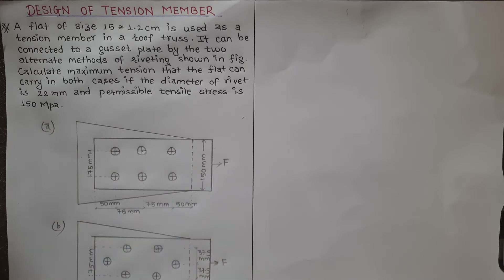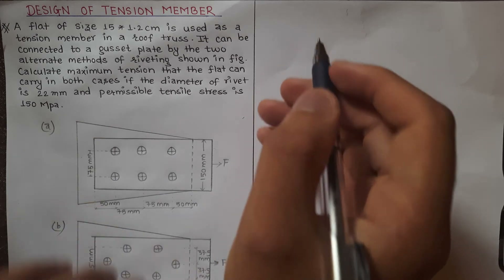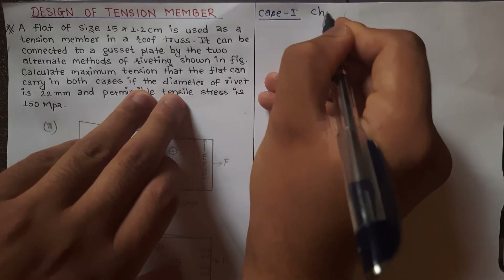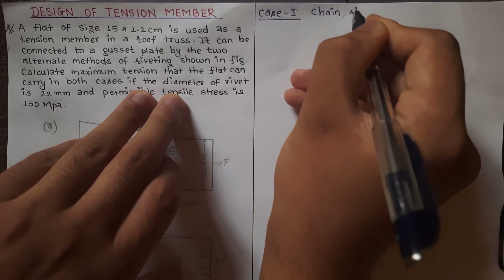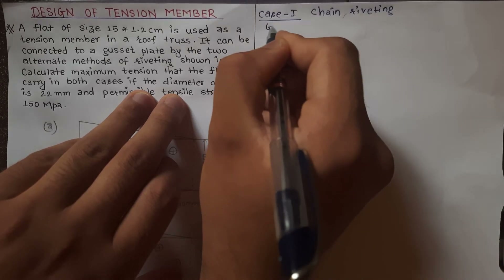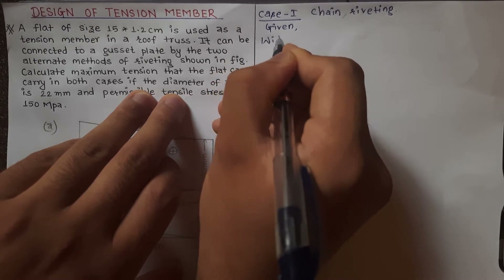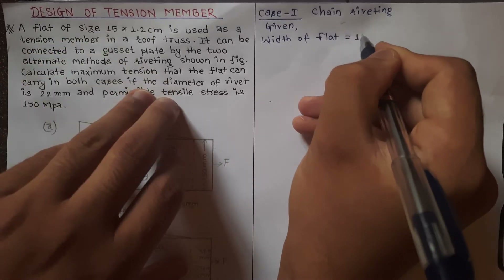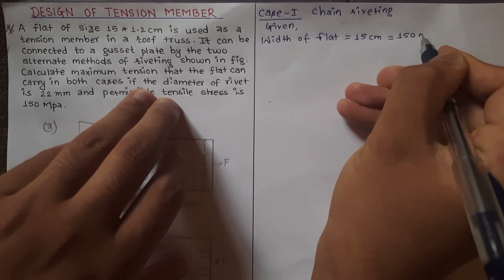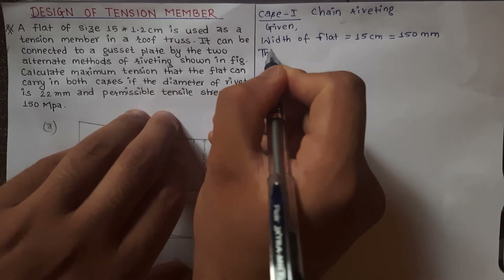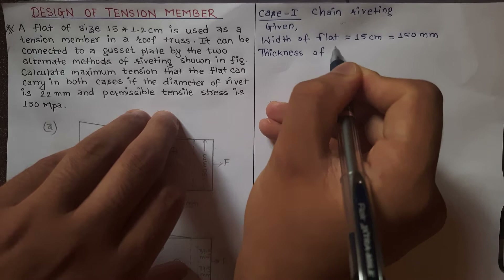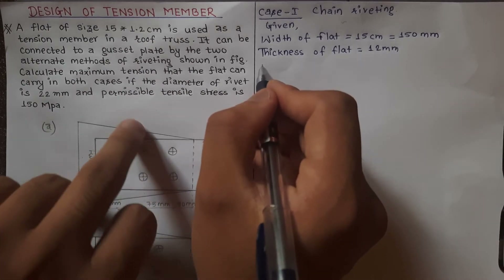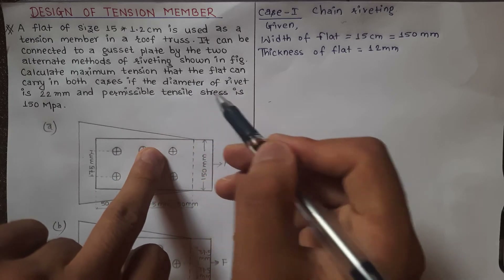We are going to show Case 1: Chain Riveting. Width of the flat b = 15 cm = 150 mm. Thickness of flat t = 1.2 cm = 12 mm. Permissible tensile stress σ = 150 MPa.